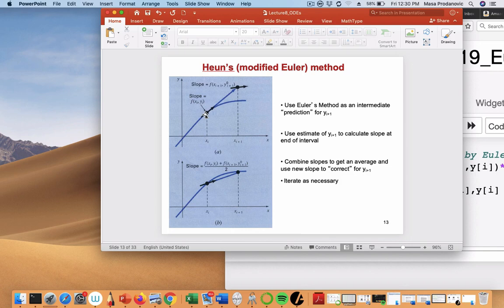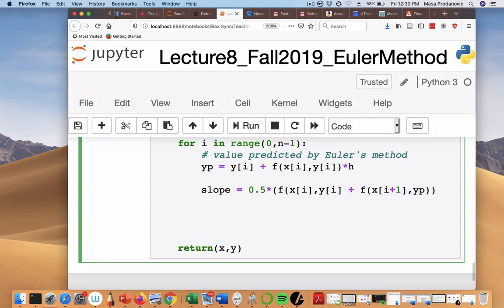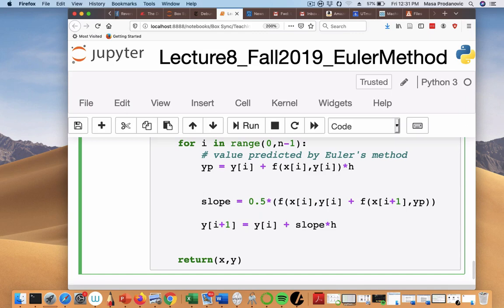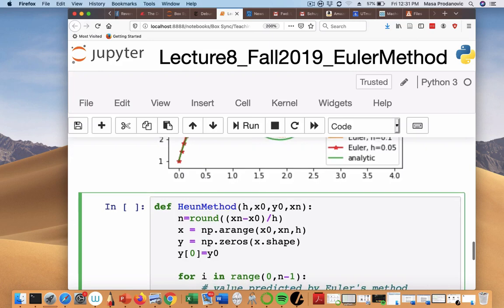My slope here is f of xy and my slope here is f of xi plus one and this predicted yp. And I average the two slopes. And that's the ultimate slope that I'm gonna take. y i plus one is y of i plus I'm just gonna say slope times h. That's it. That's what Heun's method says.